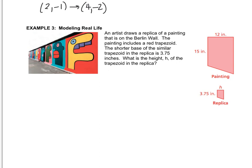So anyway, we have some measurements. We know that this length is 15, and its corresponding partner is 3.75. And then they tell us that this side is 12, and its corresponding partner is h.